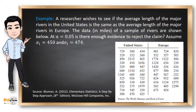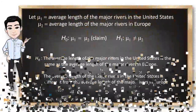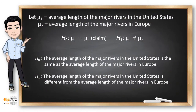For the next example, a researcher wishes to see if the average length of major rivers in the United States is the same as the average length of major rivers in Europe. At alpha level 0.05, is there enough evidence to reject the claim? The population standard deviation for the US is 450 and for Europe is 474. Since the researcher is checking if they are the same, the claim is the null hypothesis.